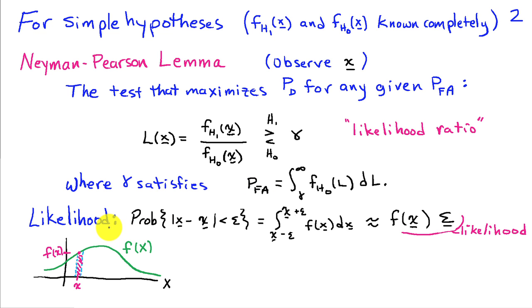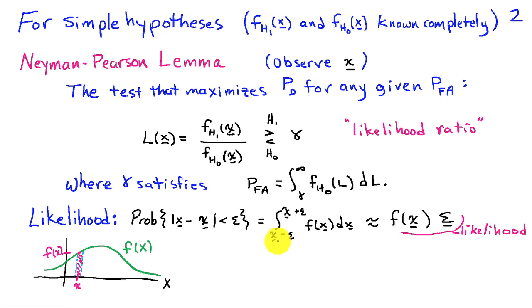This is called a likelihood ratio test because it involves the likelihood. Using straight X for a random variable and curly X for the observed value, the probability that a random variable X is very close to the observed data — within epsilon — can be written as the integral of the probability density function between x minus epsilon and x plus epsilon. When epsilon is small, this is just the probability density function evaluated at the observed data times epsilon.